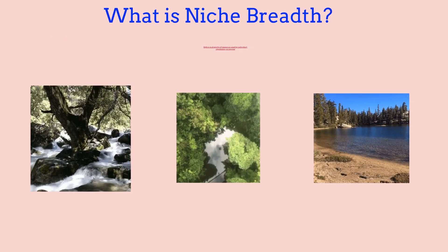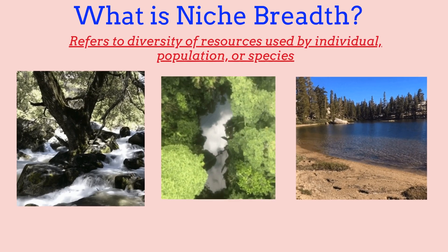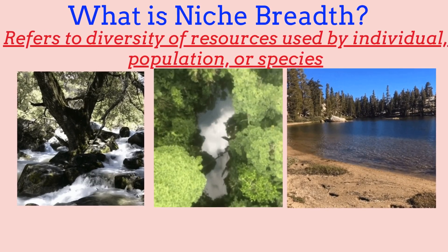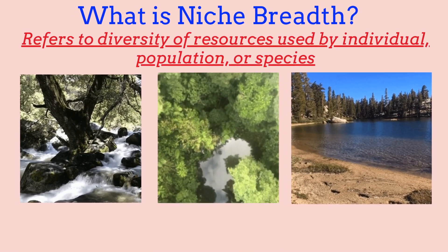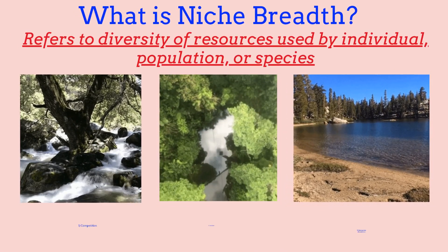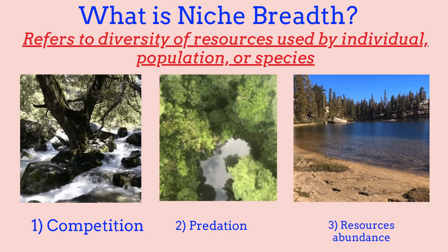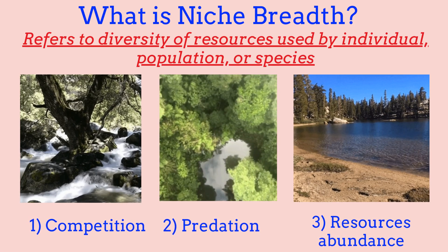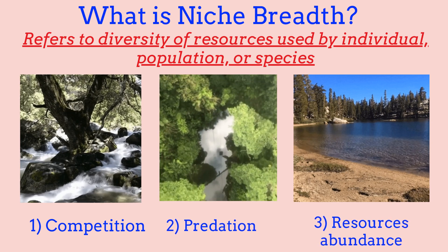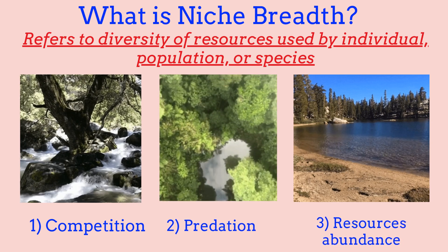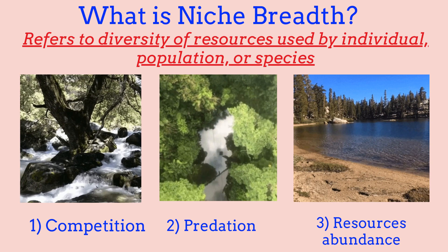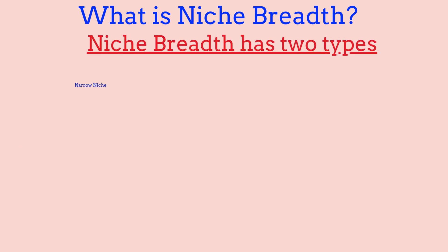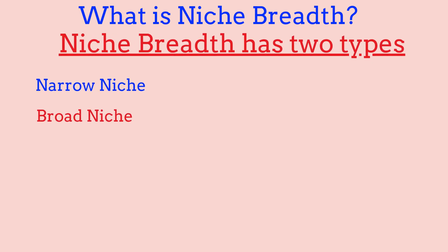A niche breadth usually refers to the diversity of resources used by an individual, population, or species. There are three factors that affect niche breadth: competition for food, predation which is hunting for one another, and resource abundance — which involves struggling for survival when resources are scarce. Niche breadth consists of two types: broad niches and narrow niches.